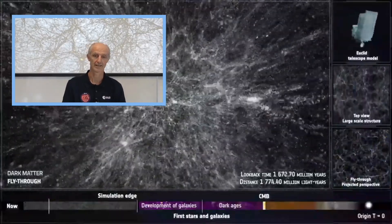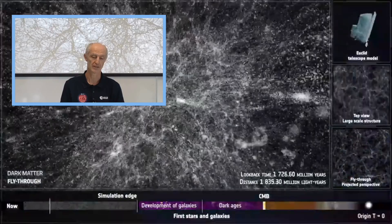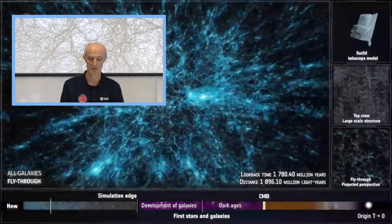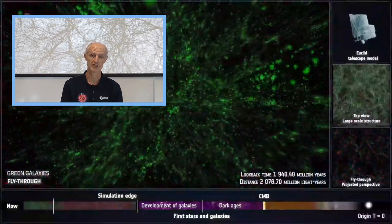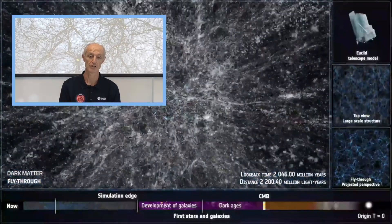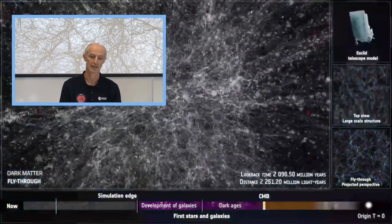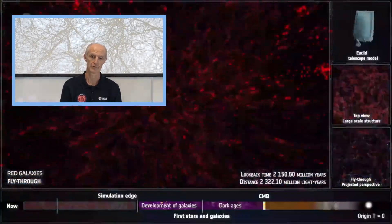The simulation is complicated to run and it needs the support, help, and work of many people. Needless to say, this has been a team effort with many people working on producing the simulations. Our next step is to produce the simulations for data release one of Euclid, which will happen in two years' time.